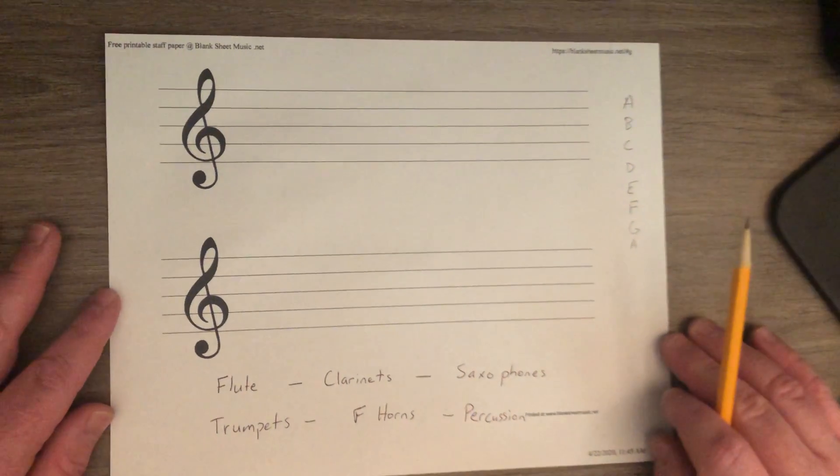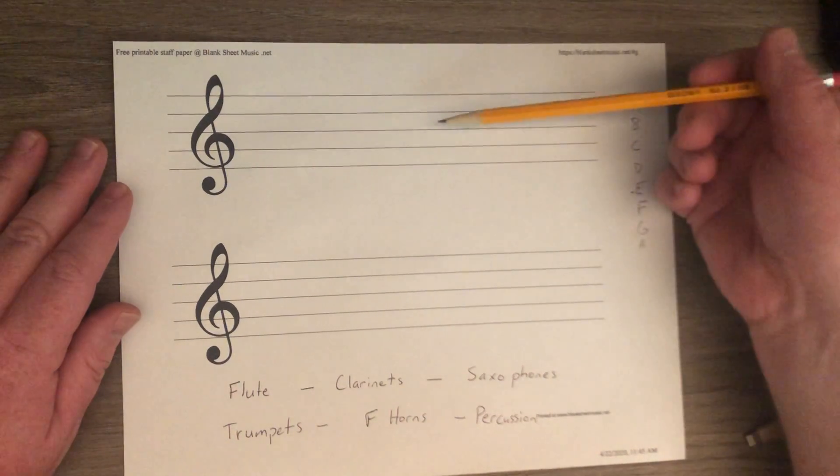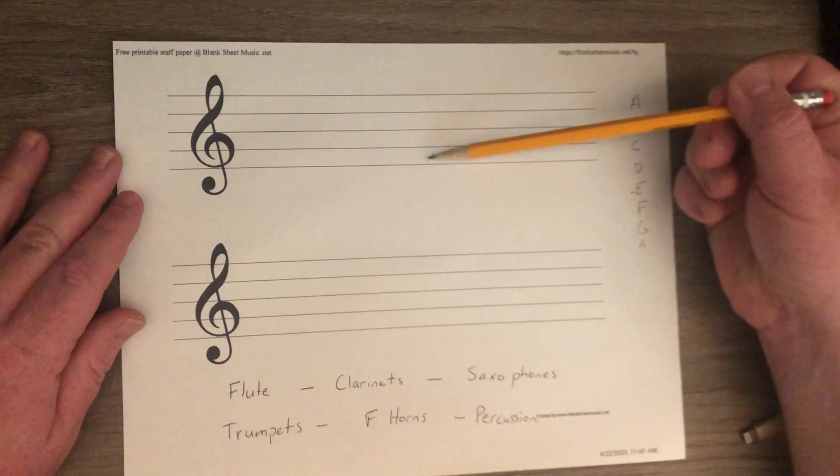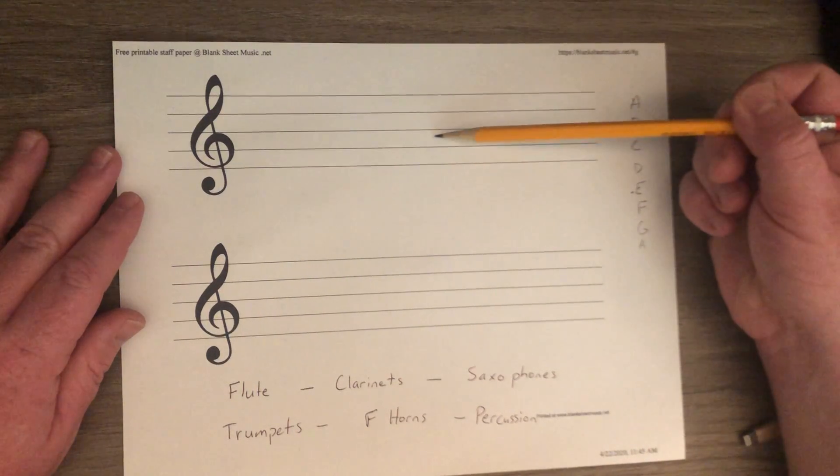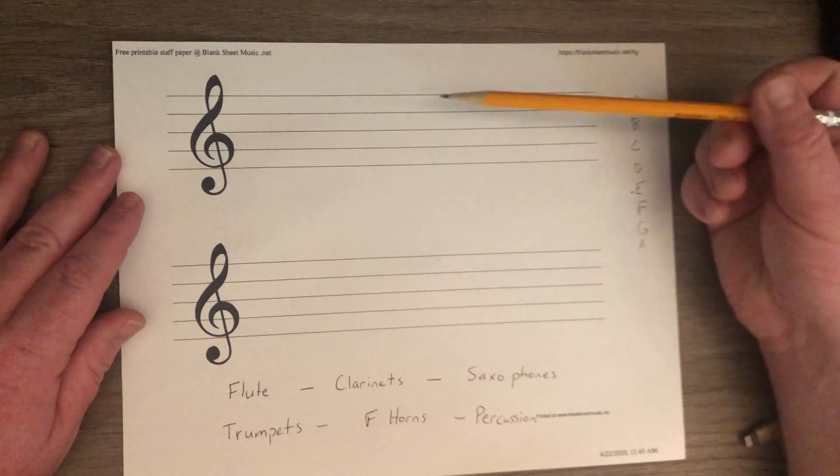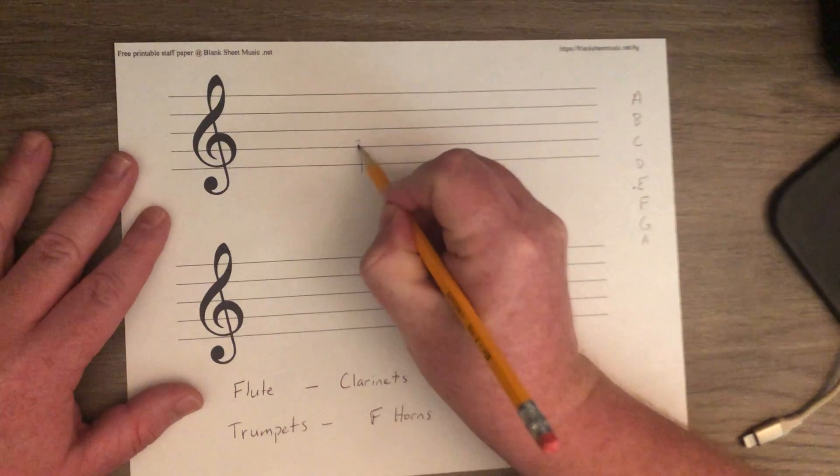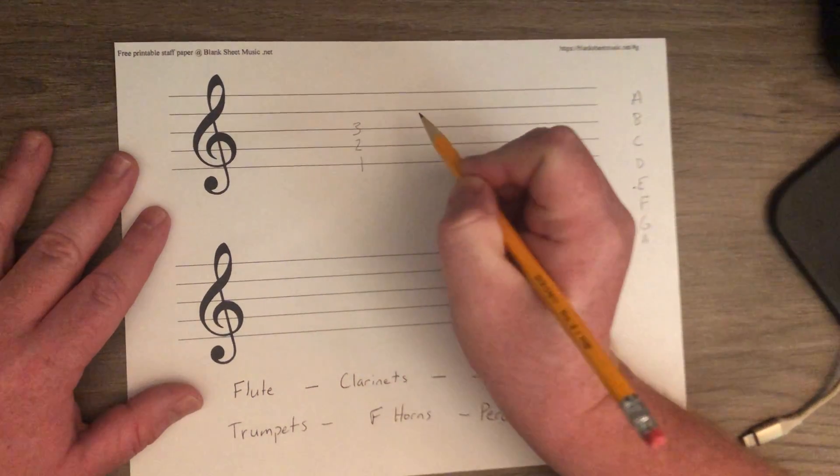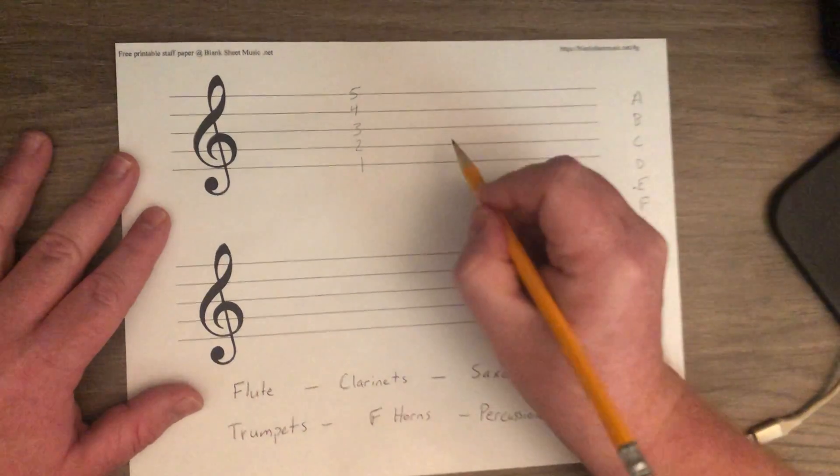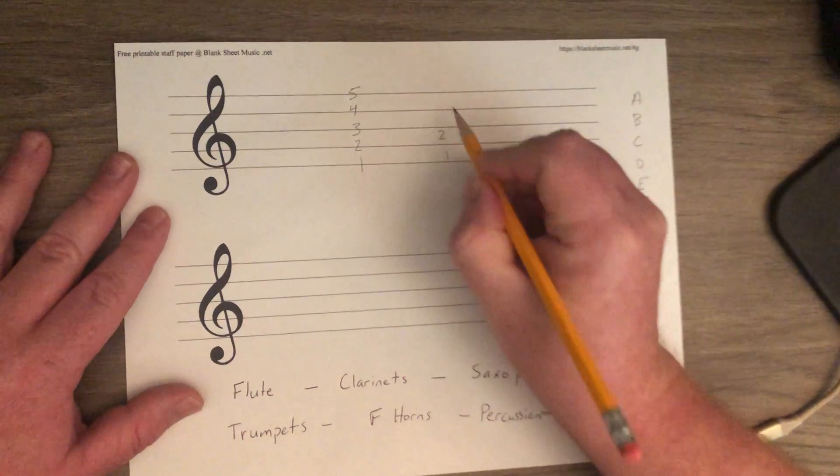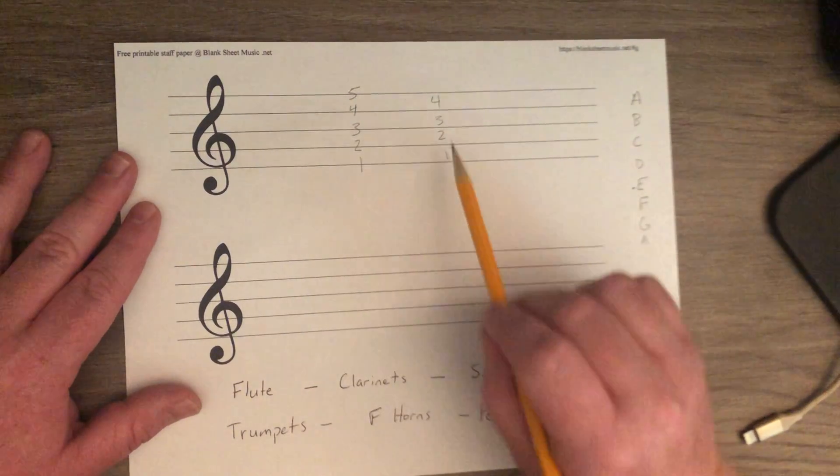Now, the way those work is we put them on what we call a staff. And a staff is a group of five lines and four spaces. Count them with me, one, two, three, four, five. And our spaces, one, two, three, four. Now, notice I'm always counting from the bottom. So what that means is that when I say the first line, I mean the one on the bottom. The second line is the one right above it. The third line is the one right above that. The fourth line is right above that. And the fifth line is right above that. And then we have one, two, three, four spaces. So five lines and four spaces.